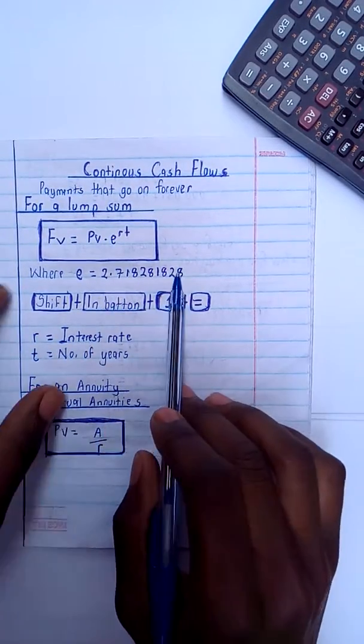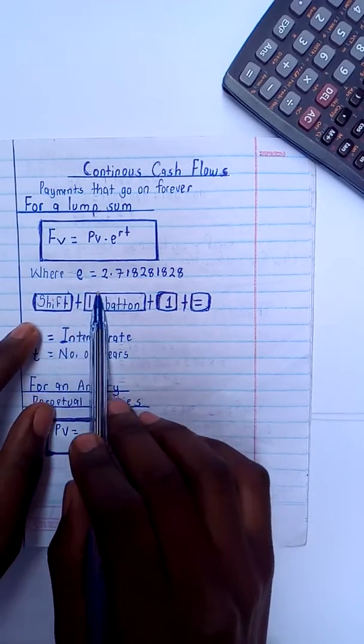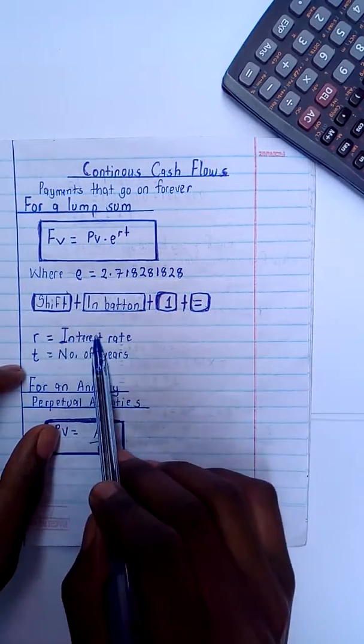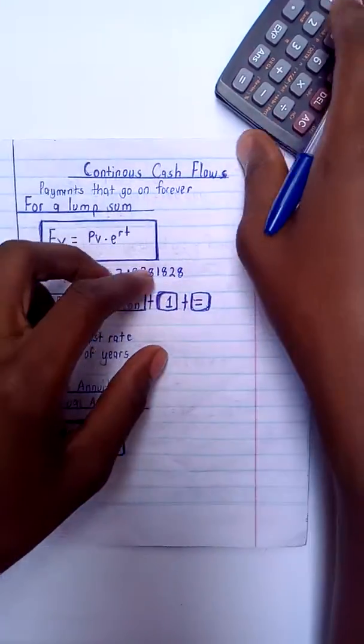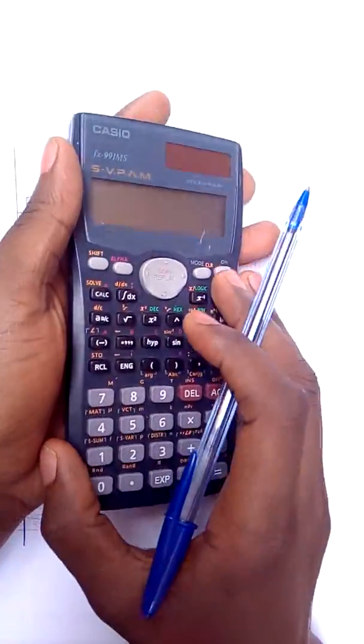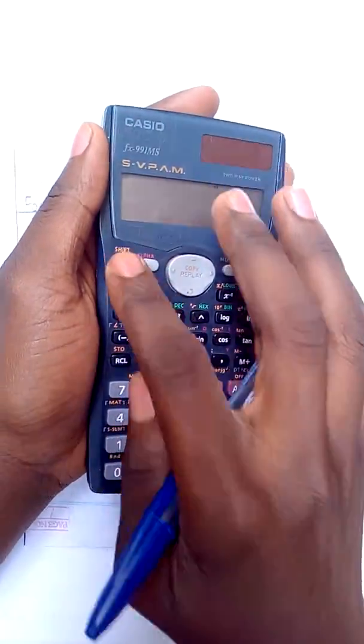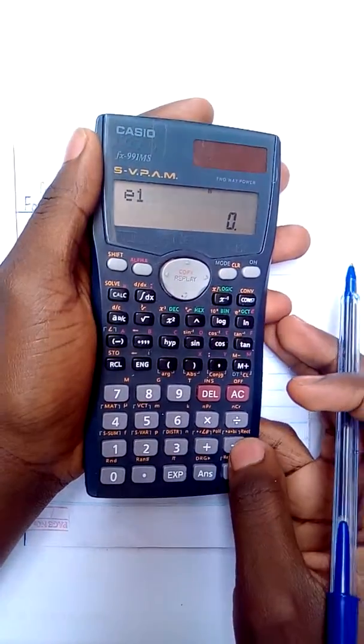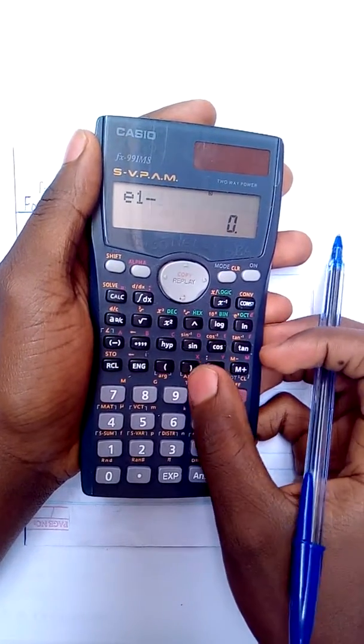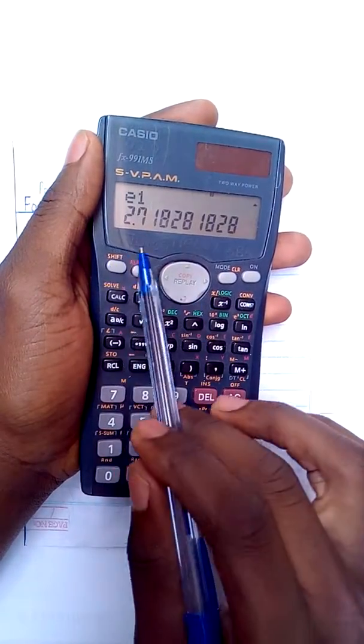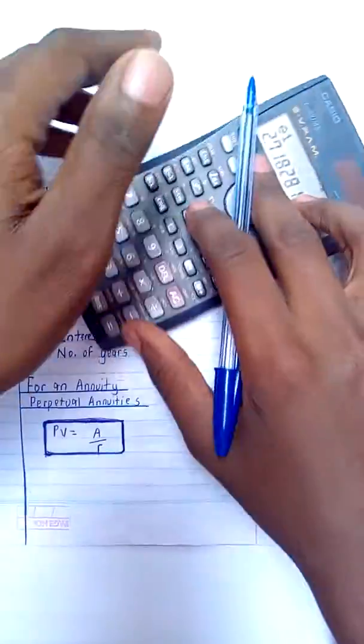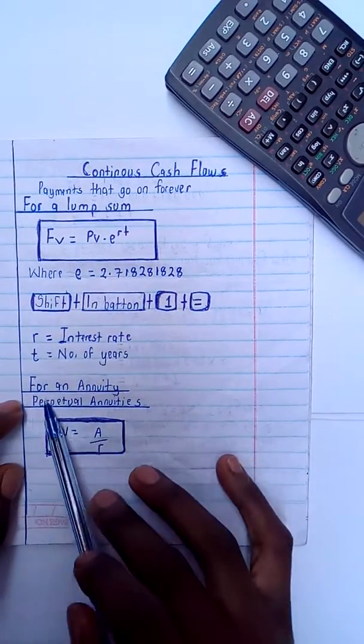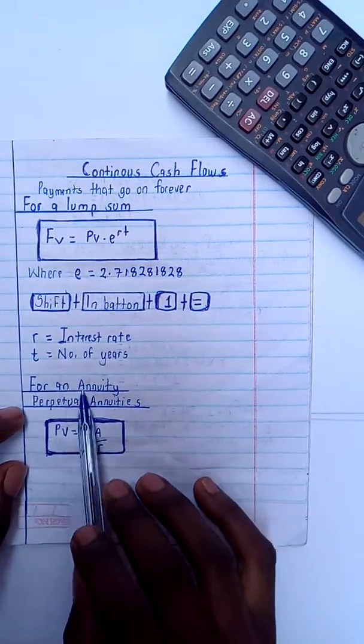But how do I get this? I'm going to go on my calculator. I press shift plus the ln button plus one plus the equal sign, whereby r will be my interest rate, t will be my number of years. So this is how I do it. I press shift, then after pressing shift I go to the ln, then one, and it's going to give me this. So that is what I have used here to get this.